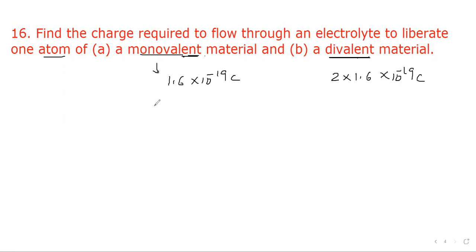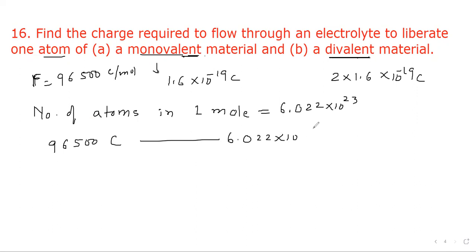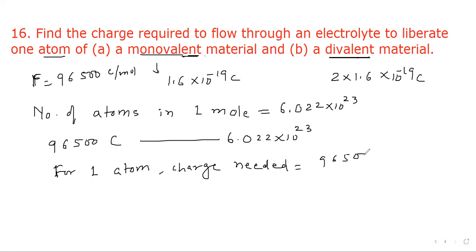The number of atoms in one mole is 6.022 into 10 to the power 23. The Faraday constant is 96,500 coulombs per mole. So 96,500 coulombs of charge is required to liberate 6.022 into 10 to the power 23 atoms. Therefore, the charge needed for one atom equals 96,500 divided by 6.022 into 10 to the power 23.